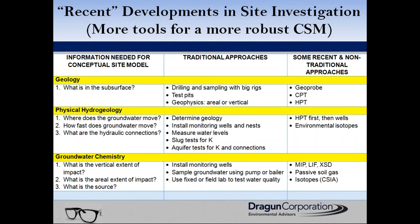This matrix on the current slide will guide us through the rest of the webinar. Starting from the left — the information needed for the conceptual site model: we need information about geology (what's under the ground), hydrogeology (where does groundwater move, how fast, how many aquifers are present, which are impacted), and groundwater chemistry (where are the chemicals, the magnitude and extent of impacts from past releases). I'll cover the traditional and non-traditional approaches for geology; Mike will cover hydrogeology and groundwater chemistry.